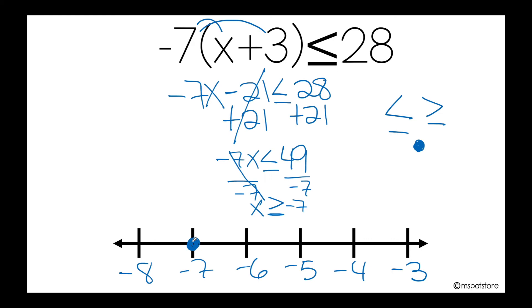So remember, on the negative side, as they move closer to 0, they become greater and greater. Those are the numbers I'm looking for — negative 6, negative 5, negative 4, and negative 3.